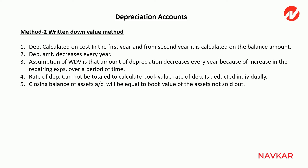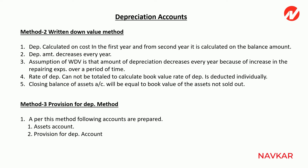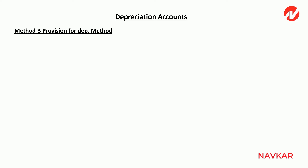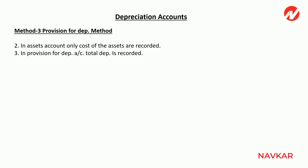Method number three is the Provision for Depreciation method. In this method, three accounts are created: the Assets Account, the Provision for Depreciation Account, and the Asset Disposal Account. Point two — in the Assets Account, only the cost of the asset is recorded. Point three — in the Provision for Depreciation Account, only the depreciation amount is recorded. Point four — the Asset Disposal Account is opened at the time of sale and closed on the same day.